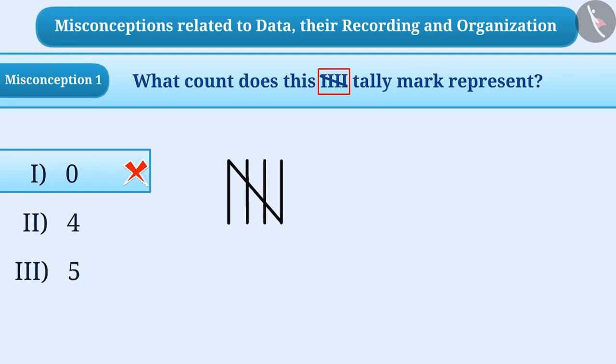Similarly, some children have the understanding that only the straight lines are to be counted in the tally mark and not to count the slant line. Therefore, they only count straight lines and do not count the slanting line.